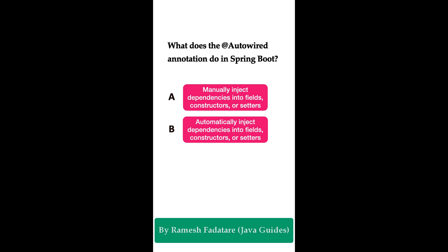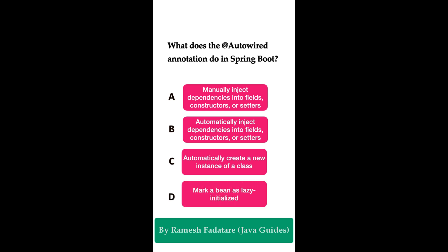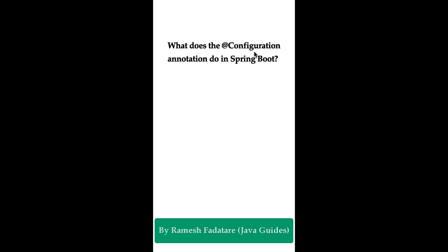What does the @Autowired annotation do in Spring Boot? Option A: manually inject dependencies into fields, constructors, or setters. Option B: automatically inject dependencies into fields, constructors, or setters. Option C: automatically create a new instance of a class. Option D: mark a bean as lazy-initialized. The correct answer is option B. The @Autowired annotation in Spring Boot is used to automatically inject dependencies into fields, constructors, and setter methods. It is part of Spring Framework's dependency injection mechanism, reducing the need for manual wiring and promoting a more modular and decoupled code base.